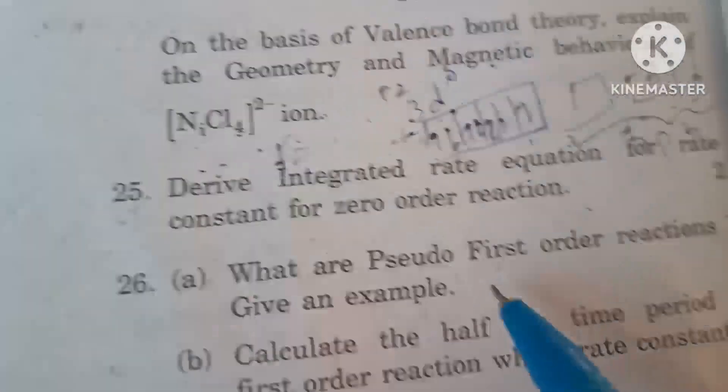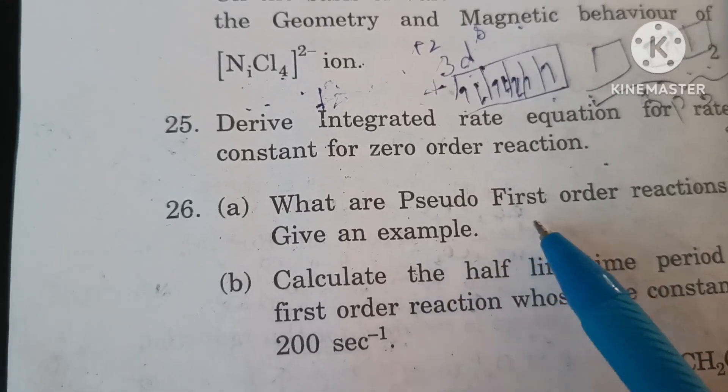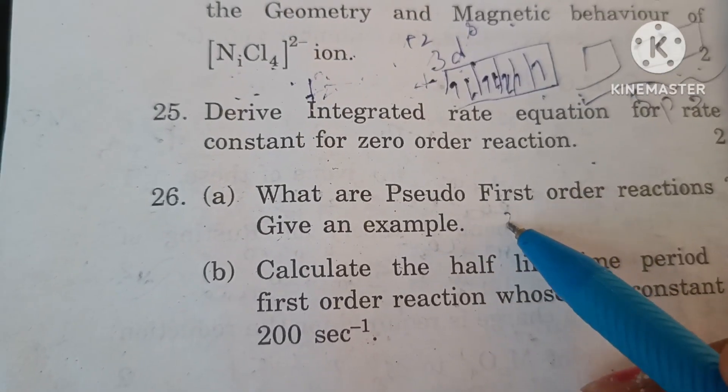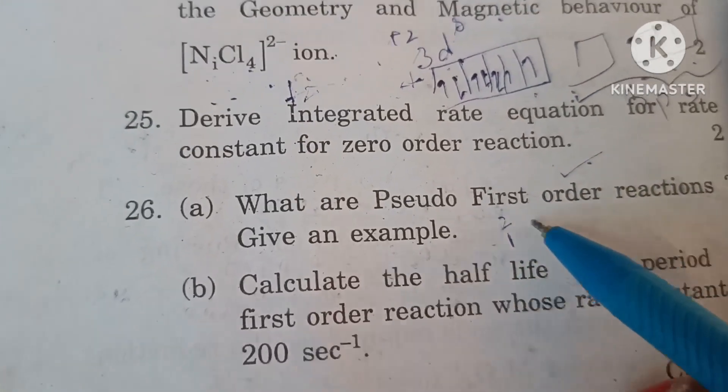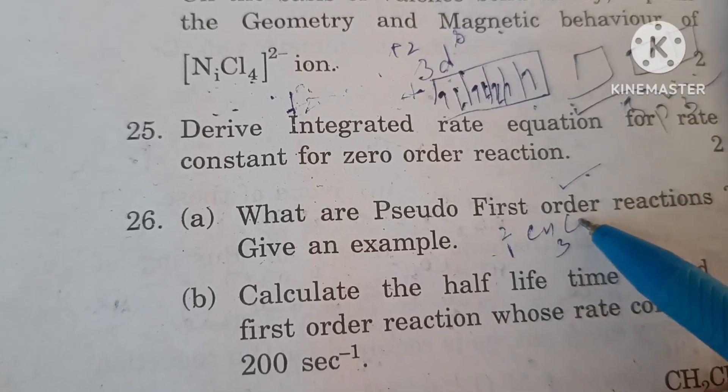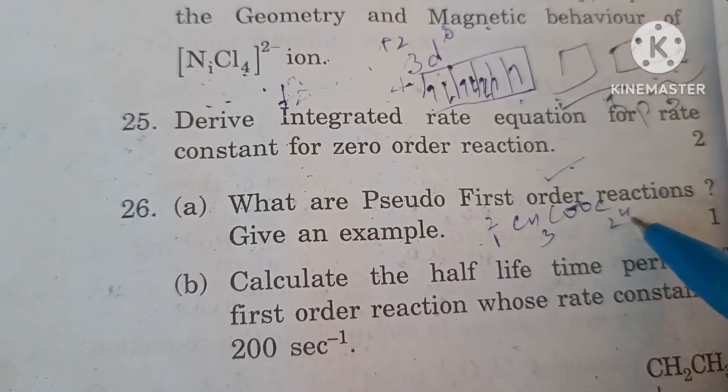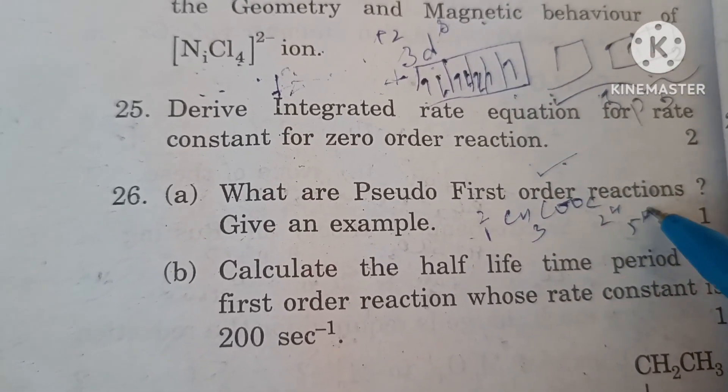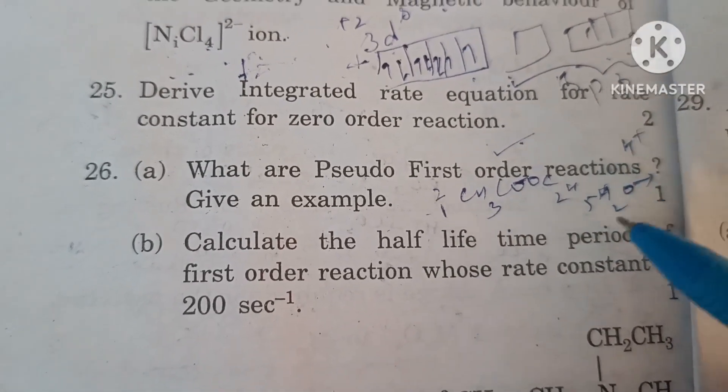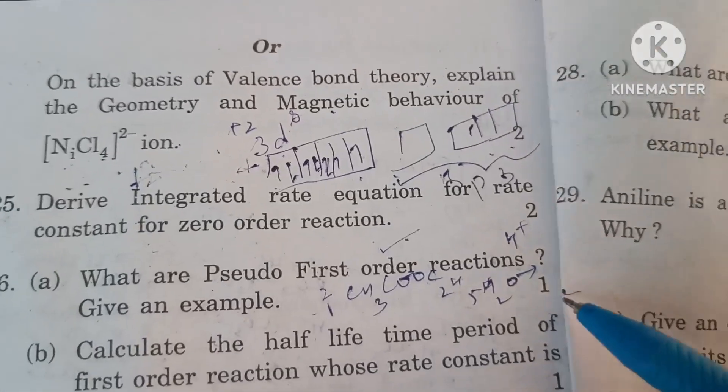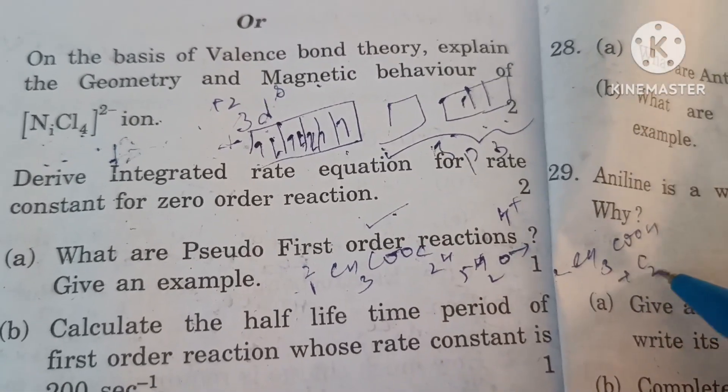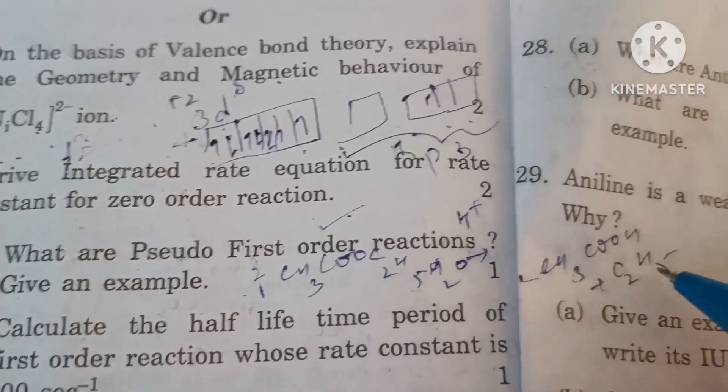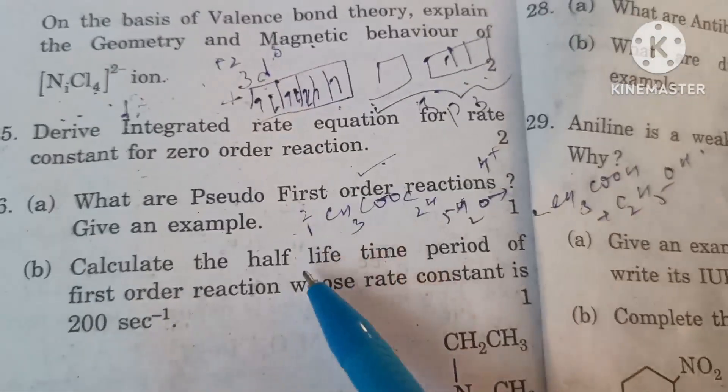What are pseudo first order reactions? Give example. Reactions which have molecularity two but order of reaction one are called pseudo first order reactions. For example, the hydrolysis of ester in the presence of acid is a pseudo unimolecular reaction to give acetic acid and ethyl alcohol.